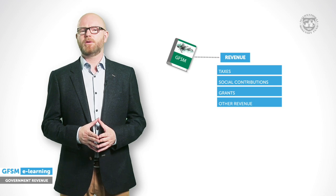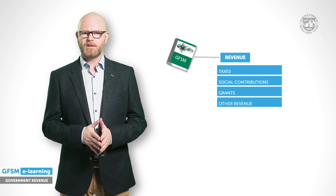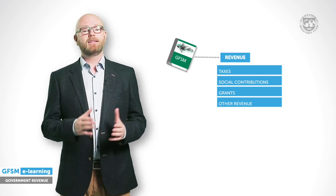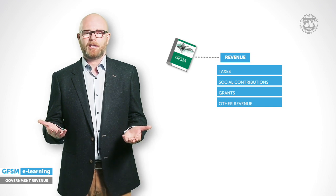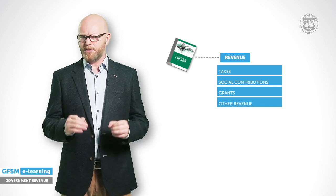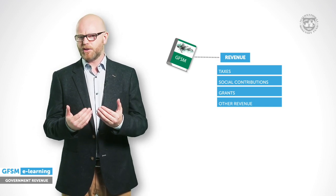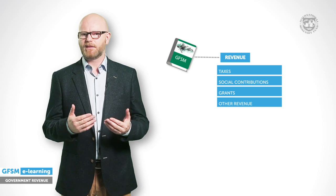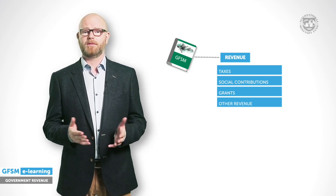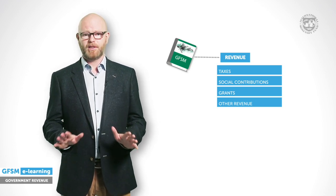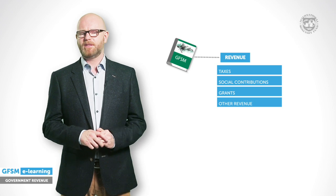Although social contributions and taxes are both compulsory, there is an important difference. Taxes offer the taxpayer nothing directly in return. However, the payers of social contributions receive a form of insurance, as they are entitled to receive social benefits such as unemployment or health benefits under predefined conditions. This is why these are grouped separately.